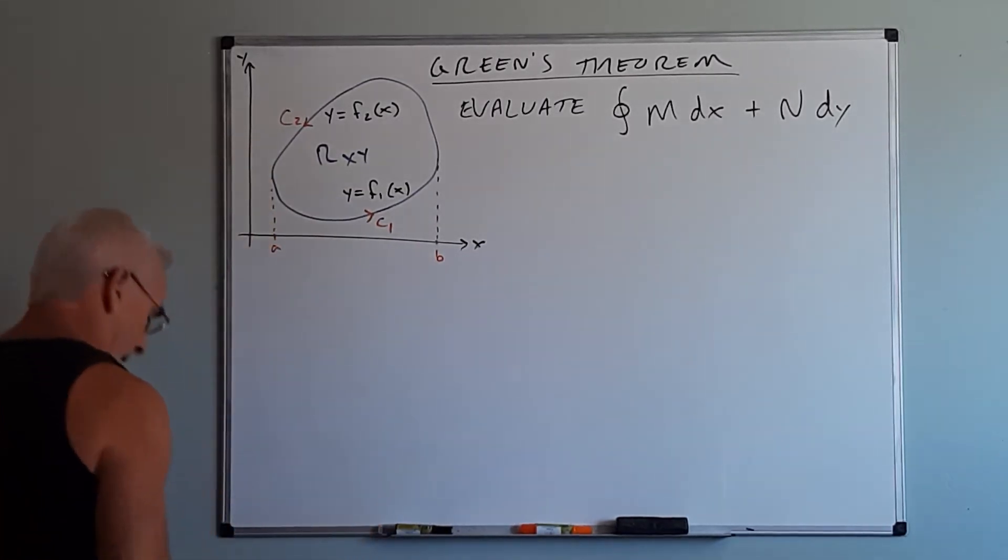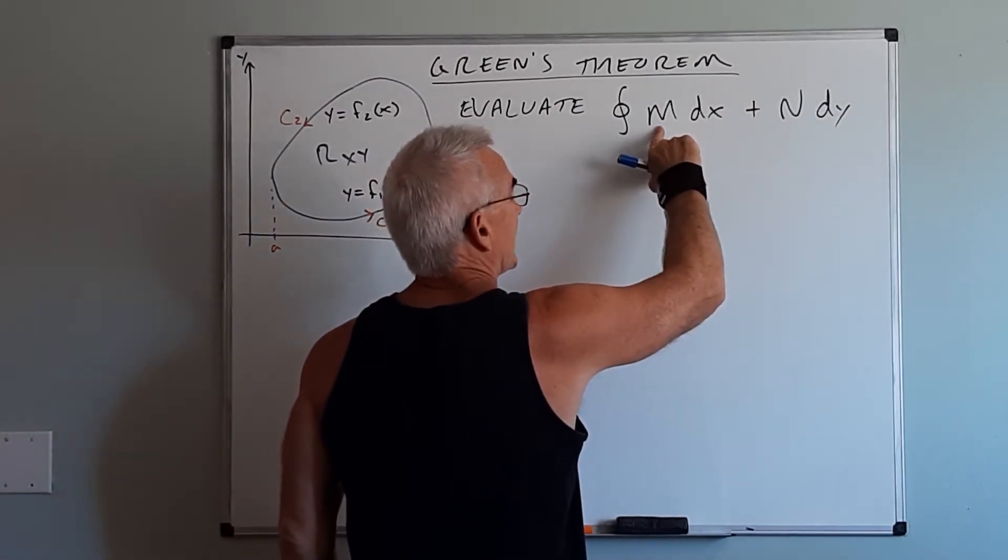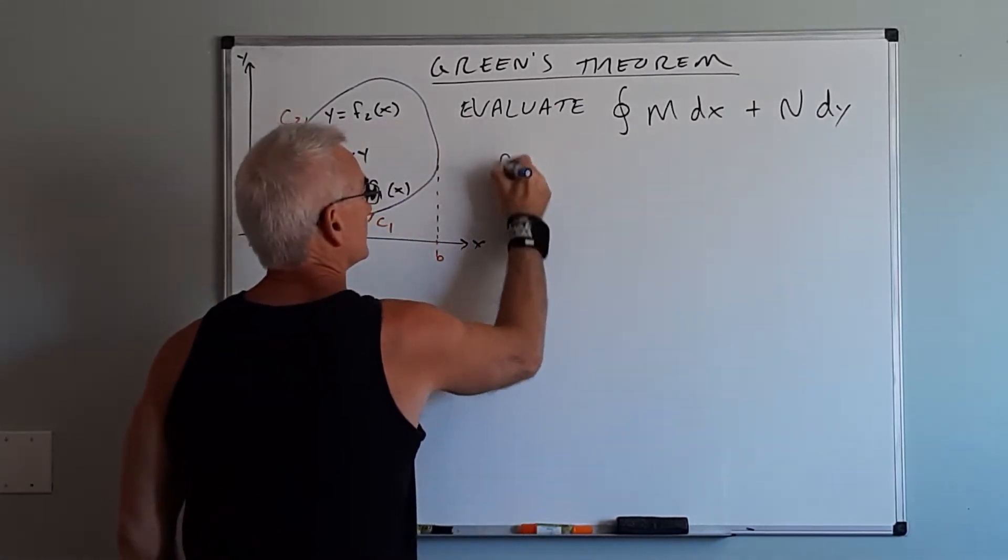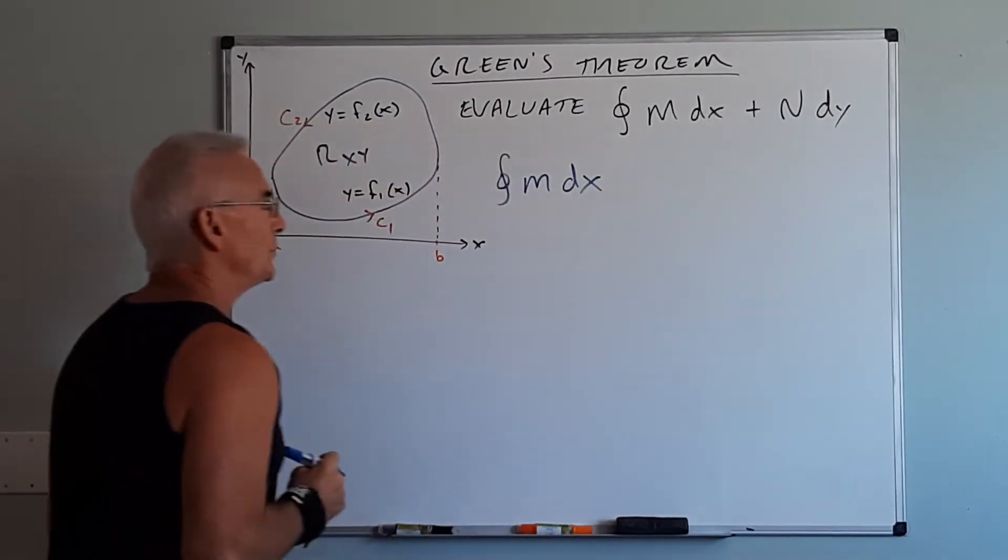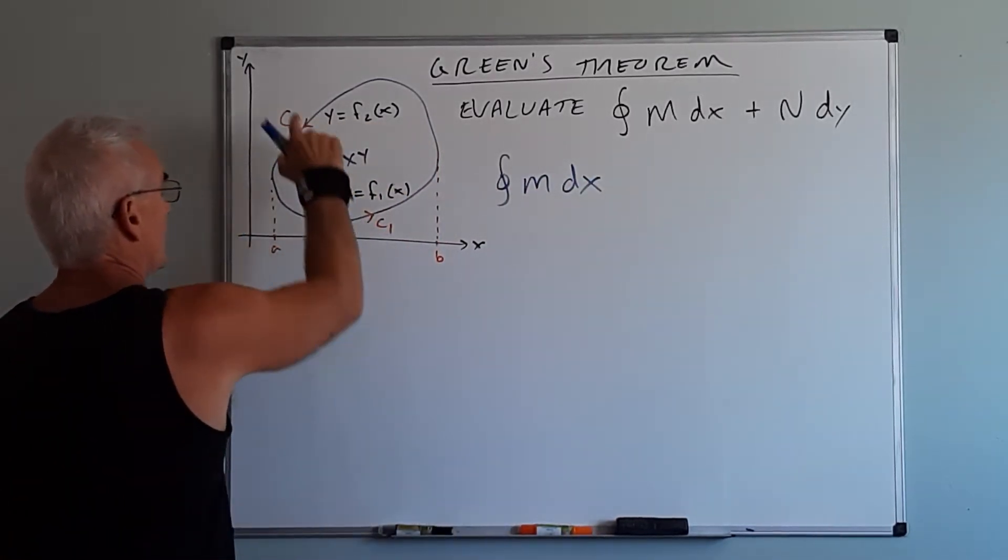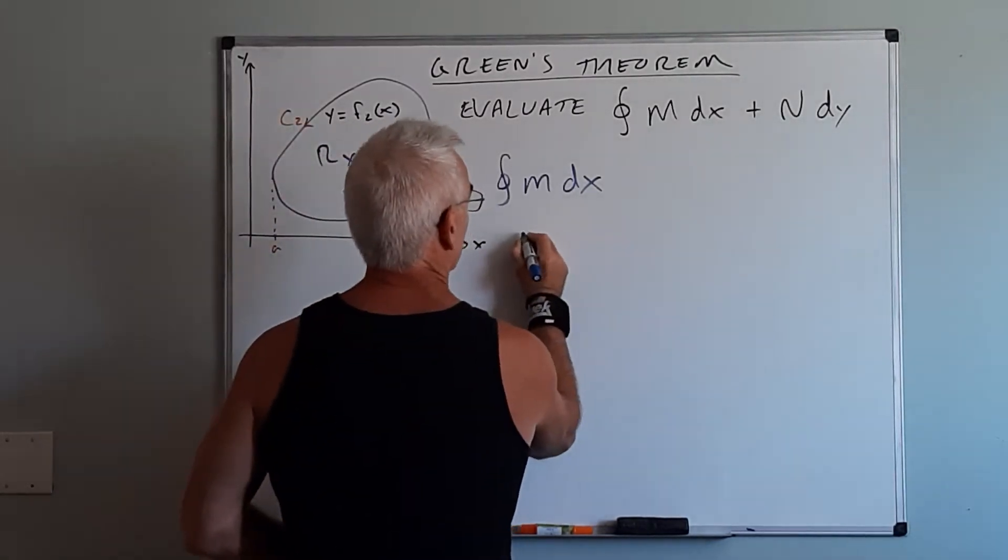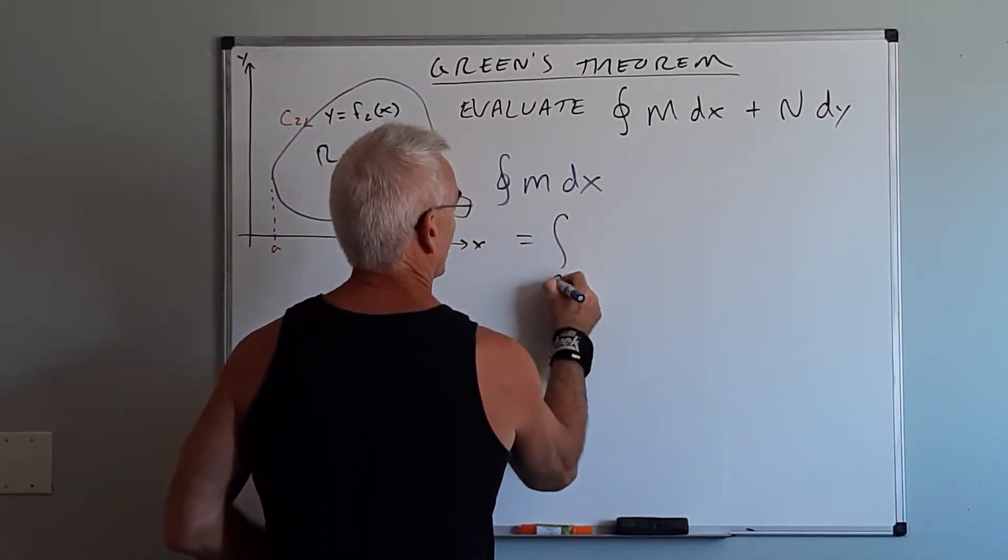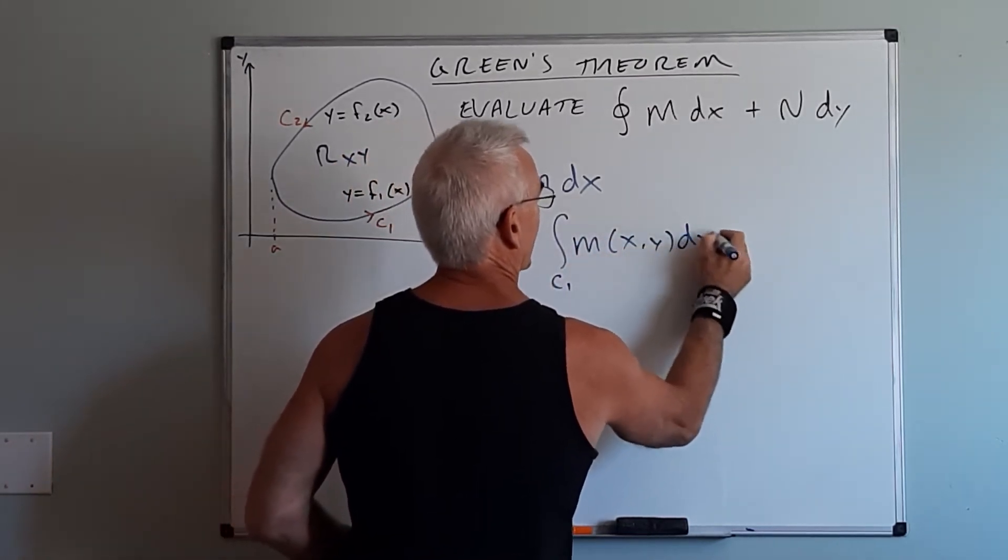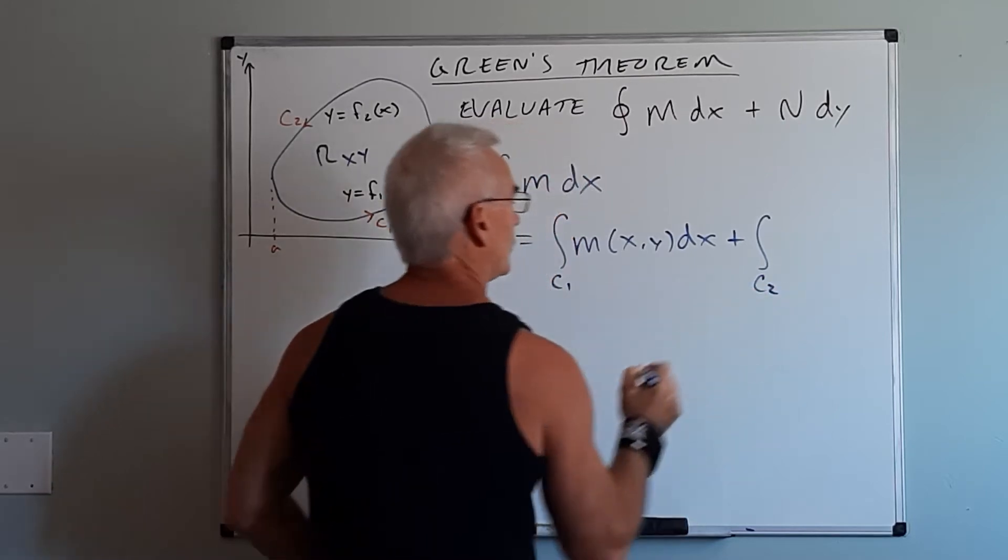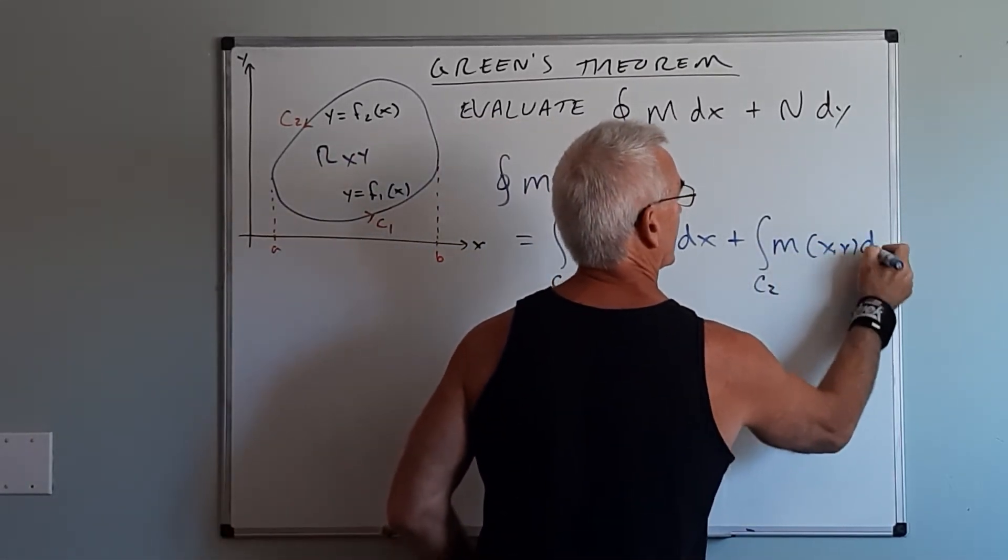So when we're doing this problem we're going to do this in pieces. We're going to start with the m dx piece first. When I do this piece it's going to be the sum of the two independent pieces here. So essentially this is going to equal the integral over C1 of m of x,y dx plus the integral over C2 of m of x,y dx.